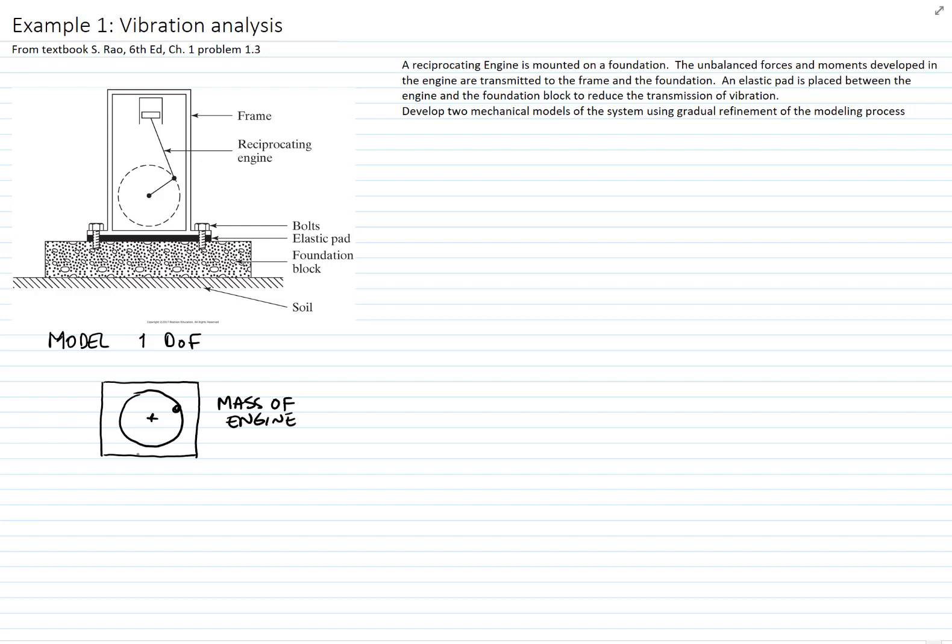This will be our equivalent mass. We can model the soil, and we will include the bolts, the elastic pad, the foundation and soil. We will find an equivalent spring or stiffness and an equivalent damper or damping coefficient that represents everything that transfers the force from the engine to the soil. That will be our simplest model.